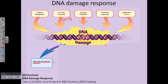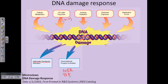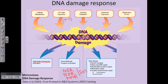DNA damage can also be fixed by transcriptional program activation, because certain genes encode proteins responsible for fixing DNA damage — for example, proteins involved in nucleotide excision repair, base excision repair, and mismatch repair. Proteins like UvrA and UmuC are responsible for DNA damage repair. The SOS repair system also starts to be activated, along with direct DNA repair.